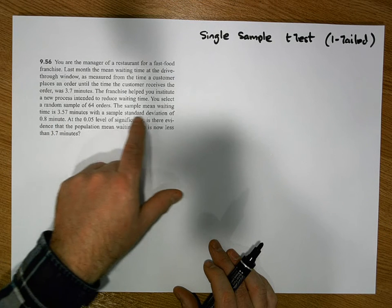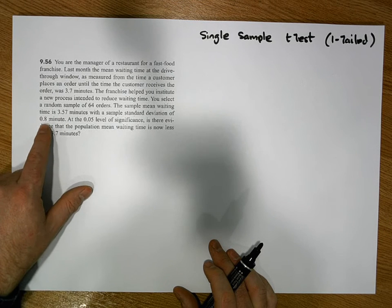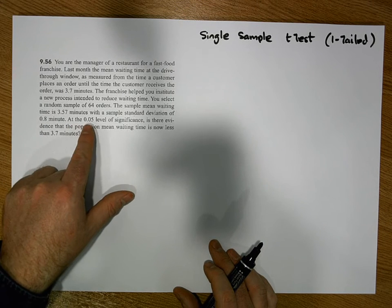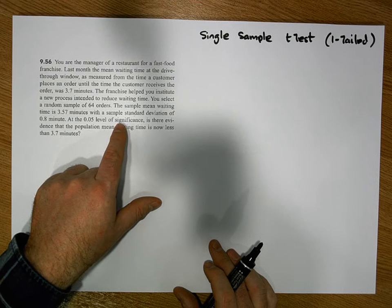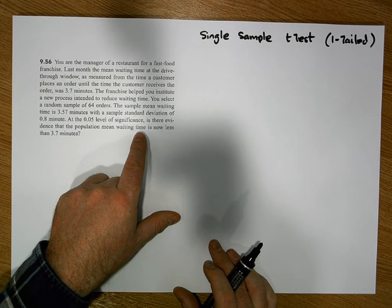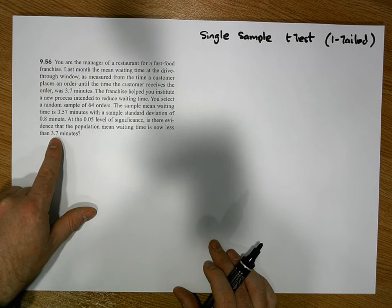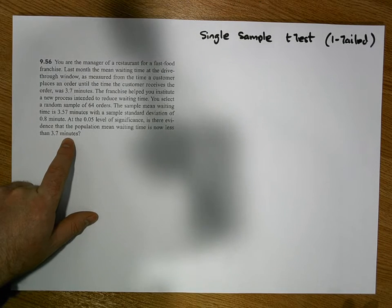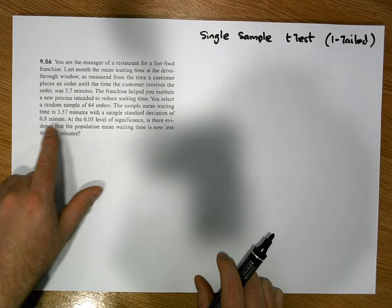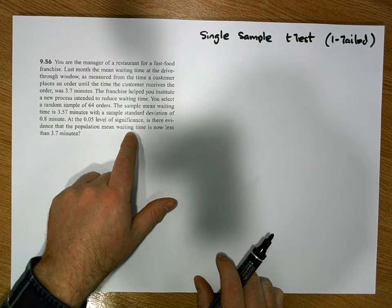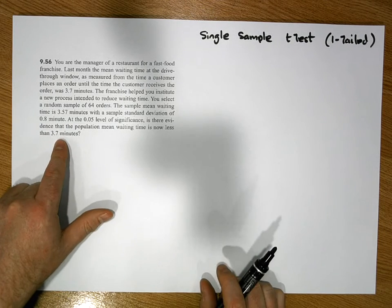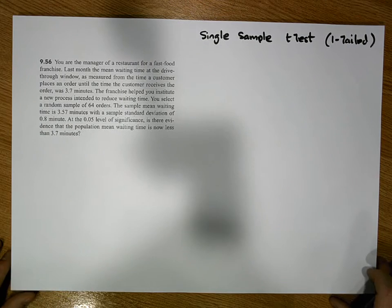The associated sample standard deviation was 0.8 minutes. The question asked is: at the 0.05 level of significance, is there evidence that the population mean waiting time is now less than 3.7 minutes? This direction — less than — is the most important part of the question.